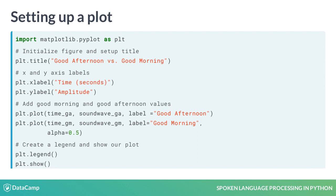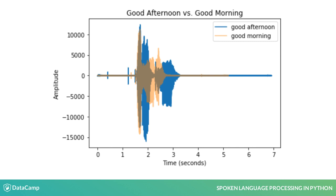Let's see it. Whoa, that looks nice. In the beginning, you can see how the two sound waves are similar where the word good would be, but then they begin to differ as morning and afternoon get uttered. These differences are what we'll be working with throughout the rest of the course as we convert sound wave integers to words.